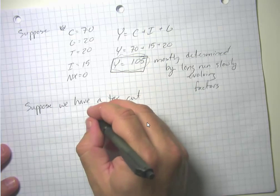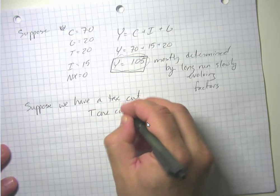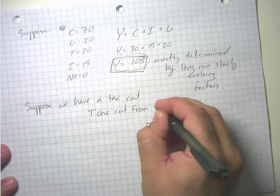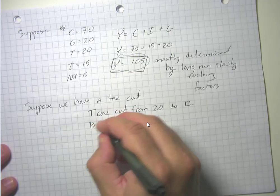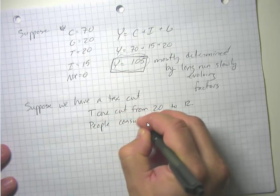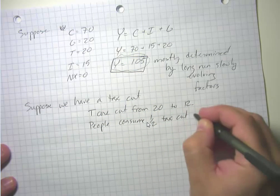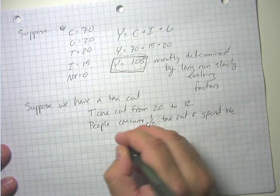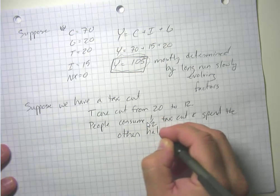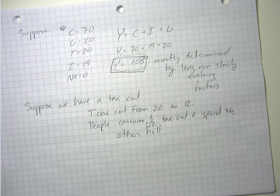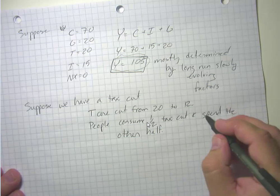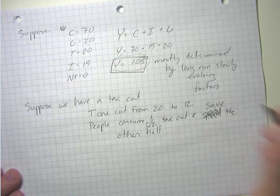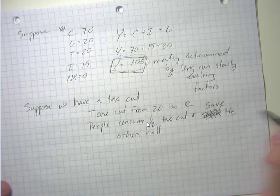Now let's suppose we have a tax cut. In particular, suppose taxes are cut from 20 to 12 — a pretty significant tax cut. And people consume half their tax cut and save the other half. We might hope this tax cut gives people higher after-tax income and they'll actually save more. So what is the new level of national saving?